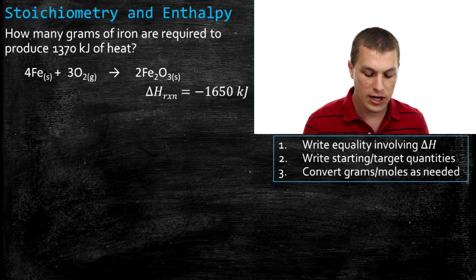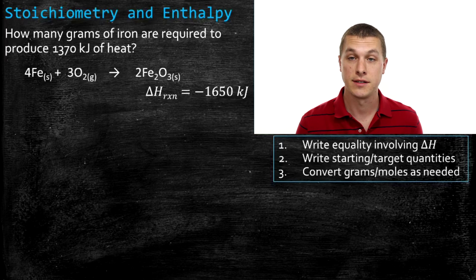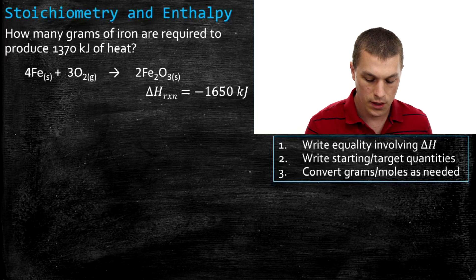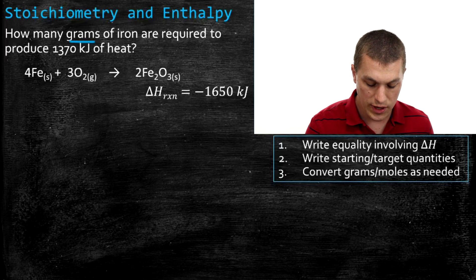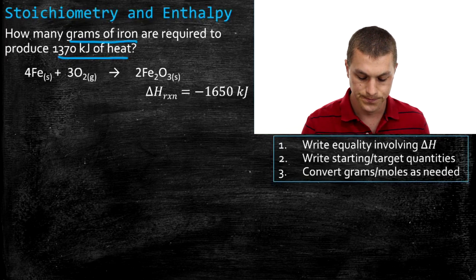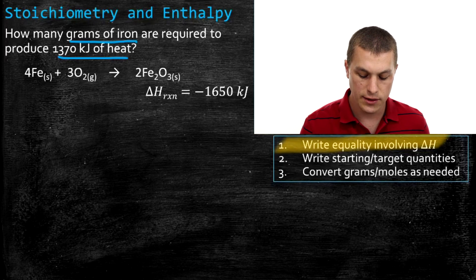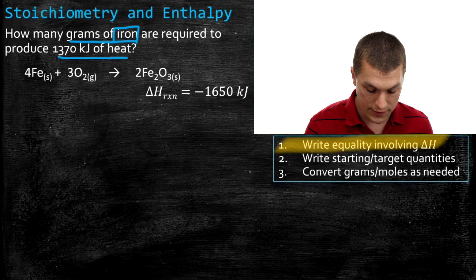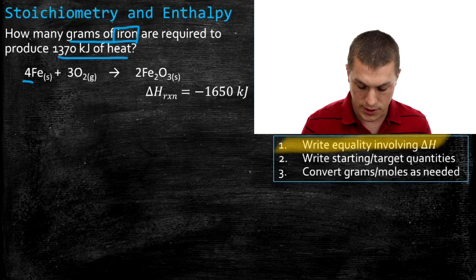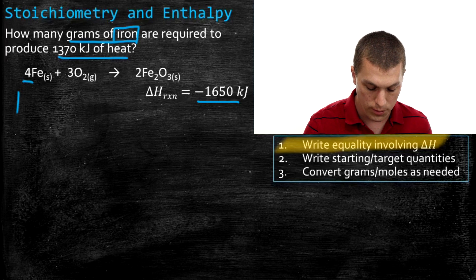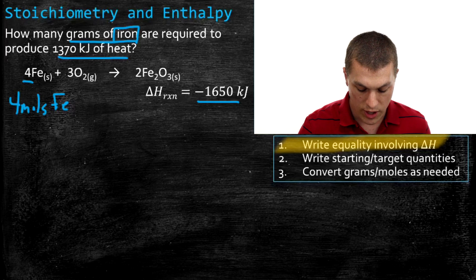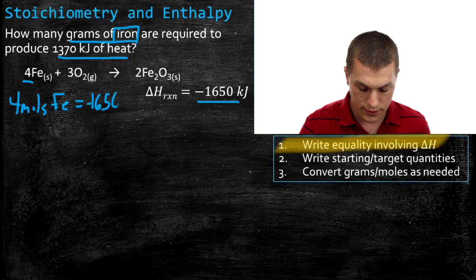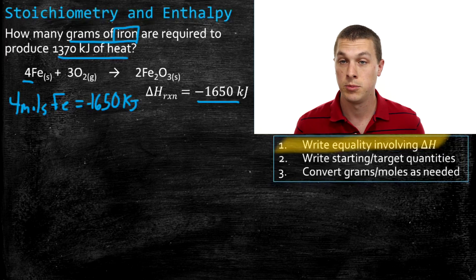For the last problem, we're looking at a different reaction: combining solid iron with oxygen to make iron oxide, which also releases heat. The question asks how many grams of iron are required to produce 1370 kilojoules of heat — so we're going from heat to grams. Step one: write the equality involving delta H. We're interested in iron, and the number in front of iron is four, with a delta H of reaction of negative 1650 kilojoules. So the equality is: four moles of iron combined with three moles of oxygen gives out negative 1650 kilojoules of heat.